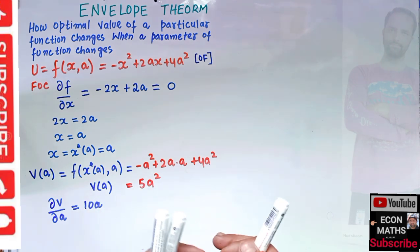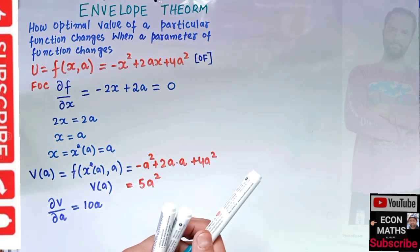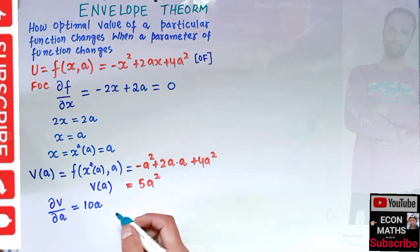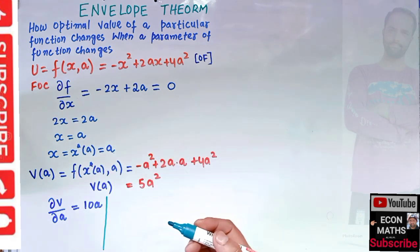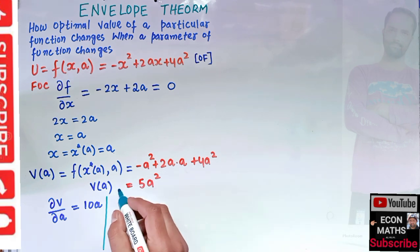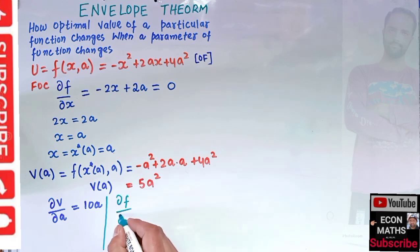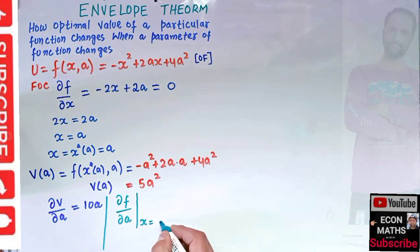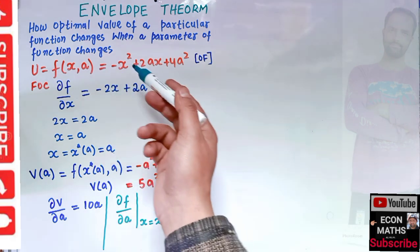The envelope theorem tells us we don't need to do all those steps. Instead, we can simply differentiate the objective function f directly with respect to the parameter a, and then evaluate it at the critical point x equals x-star(a).